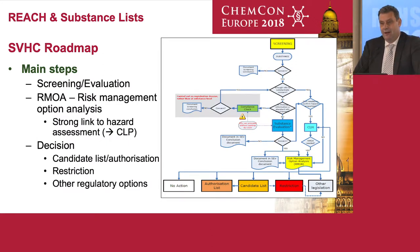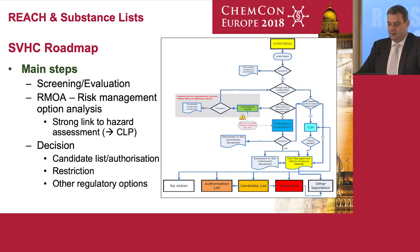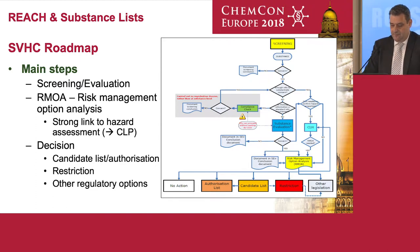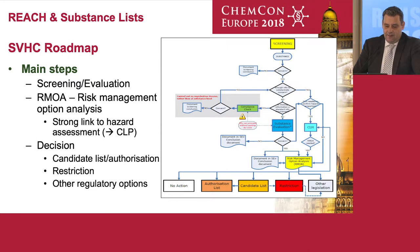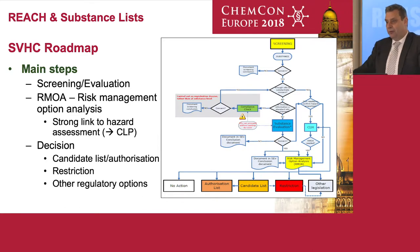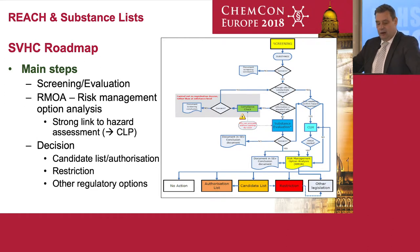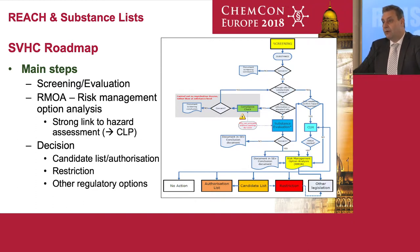What were the elements of that roadmap? The main steps: first you had screening of all different substances — screening also done by evaluation as a tool. Then the new element of risk management option analysis was implemented, with a strong link to the hazard and the intrinsic property of the substance. Then there should be a decision: should it go the authorization pathway, should it be restricted, should some other regulatory options be picked — or there could also be the decision that everything is fine with the way we handle the substance, just close the file.